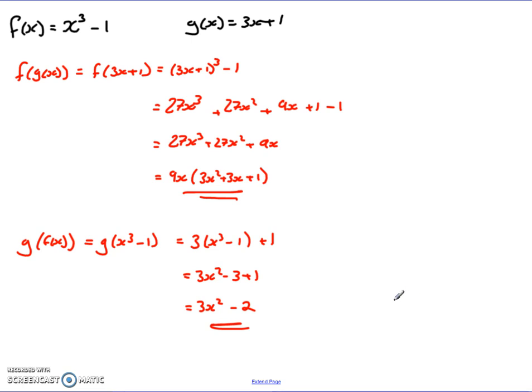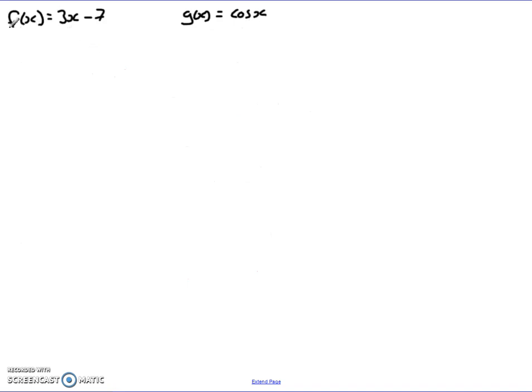And it doesn't actually add much to the level of complexity when we introduce trig functions. So the last example was f(x), it was 3x - 7 and g(x), it was cos x. So in this case, f(g(x)) introduces the cos x to the whole thing. So it's f(cos x) for this one.